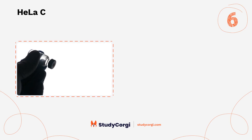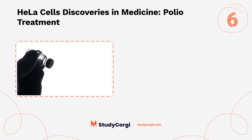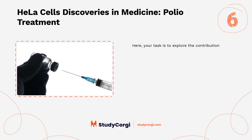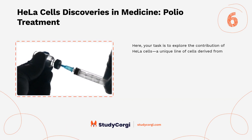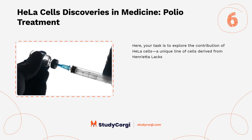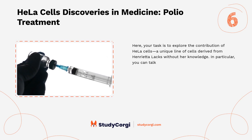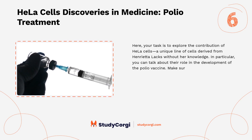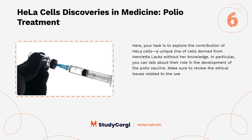Topic 6: HeLa cells — discoveries in medicine and polio treatment. Your task is to explore the contribution of HeLa cells, a unique line of cells derived from Henrietta Lacks without her knowledge. In particular, you can talk about their role in the development of the polio vaccine. Make sure to review the ethical issues related to the use of HeLa cells.